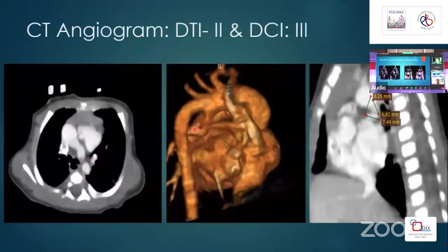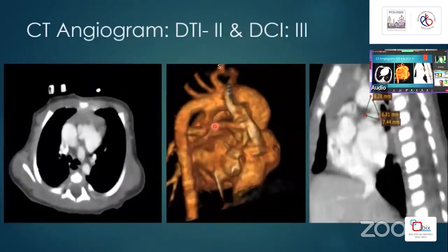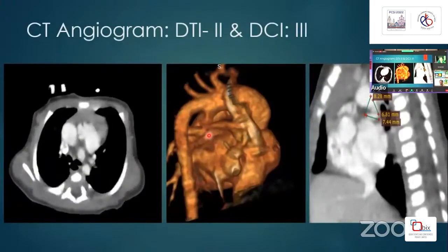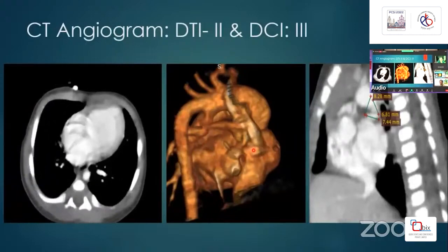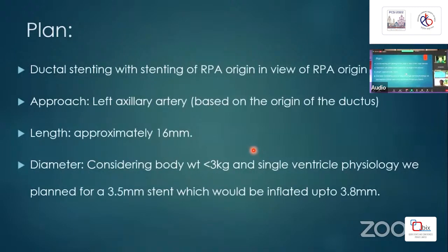CT scan shows confluent branch pulmonary arteries on 3D reconstruction flipped 180 degrees. The RPA origin is stenosed and there is no MPA stump. We calculated the ductal tortuosity index which came to 2 and the curvature index is 3. We are planning ductal stenting, encroaching the stent up to the RPA origin given the RPA origin stenosis, preferring a left axillary approach. The duct length is approximately 16 mm.